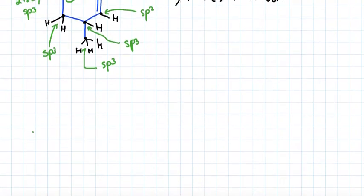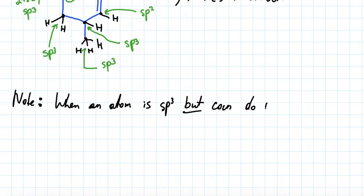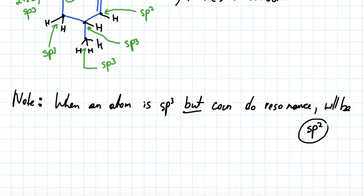Now I'll tell you about a slight exception to the rule. When an atom is sp3 hybridized but it can participate in resonance, it will not actually be sp3 — it will be sp2. Sometimes you would think something is sp3, but the correct answer is sp2, and that happens when an atom is participating in resonance.